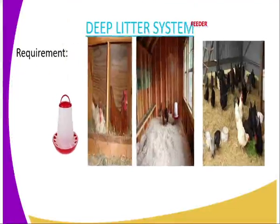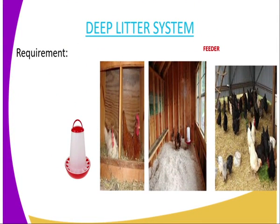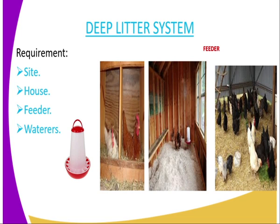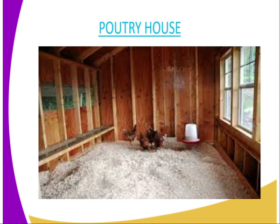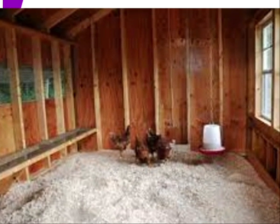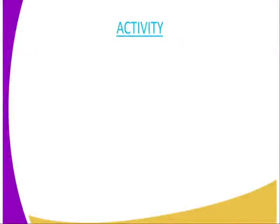Then we go to the deep litter system. The requirements include: number one, we have the feeder — as you can see, these are the structures meant for putting the feed. You also need a house, which is well illustrated here. Inside the house, there are materials which are put there — there is litter. Litter can be made up of shavings, which is one of the main materials needed when it comes to litter preparation.